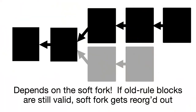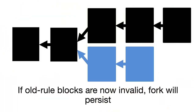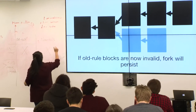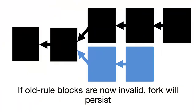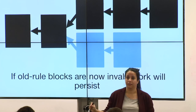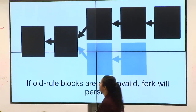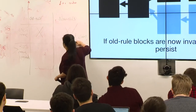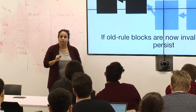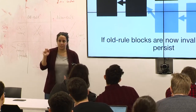If old-rule blocks are still valid, the soft fork will get reorg'd out — no fork there. You're not really going to end up with new stuff in the blockchain. If old-rule blocks are now considered invalid by the new-rule nodes, we're going to end up with two chains. The new-rule people won't accept any chain with an invalid thing in it, so there will be two chains — they're not going to reorg out, they'll continue and ignore all blocks on the other chain.